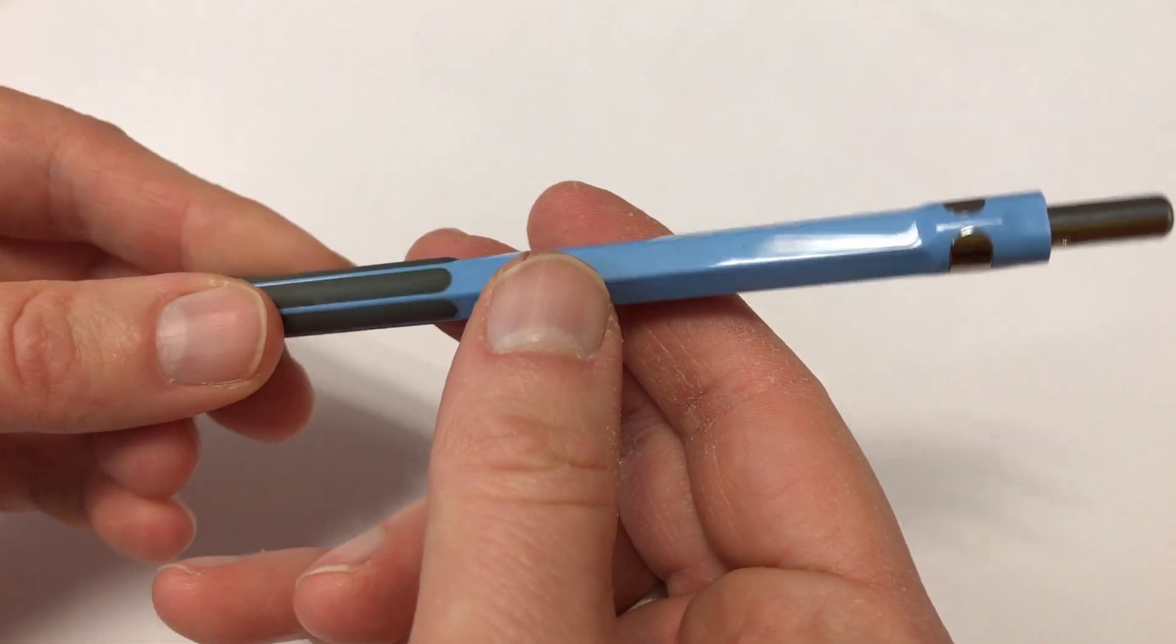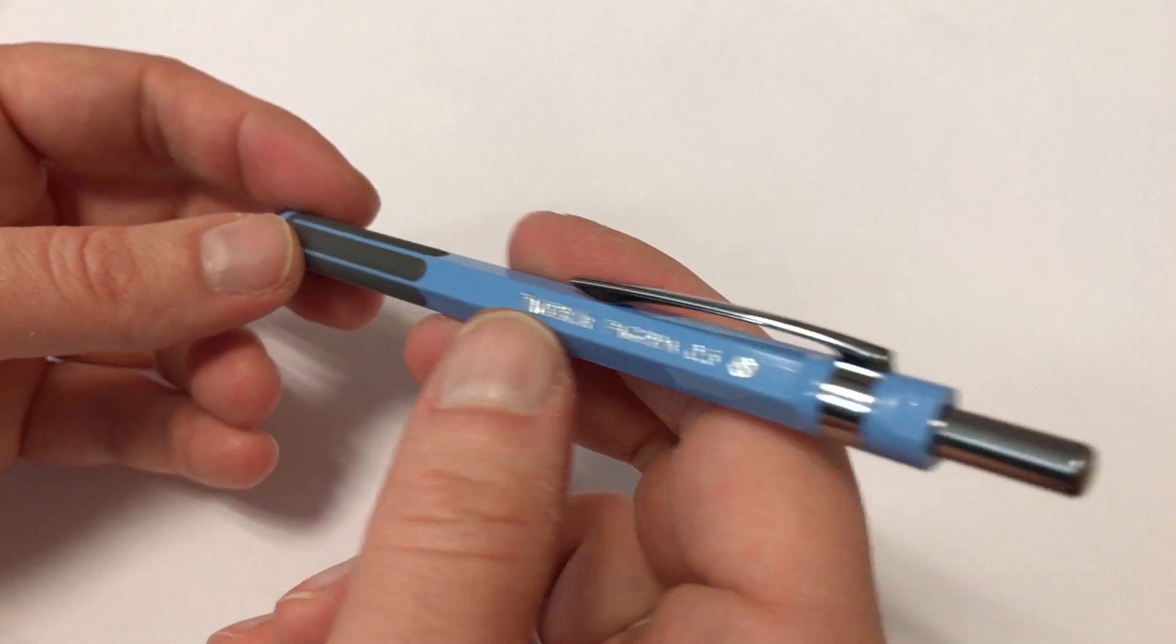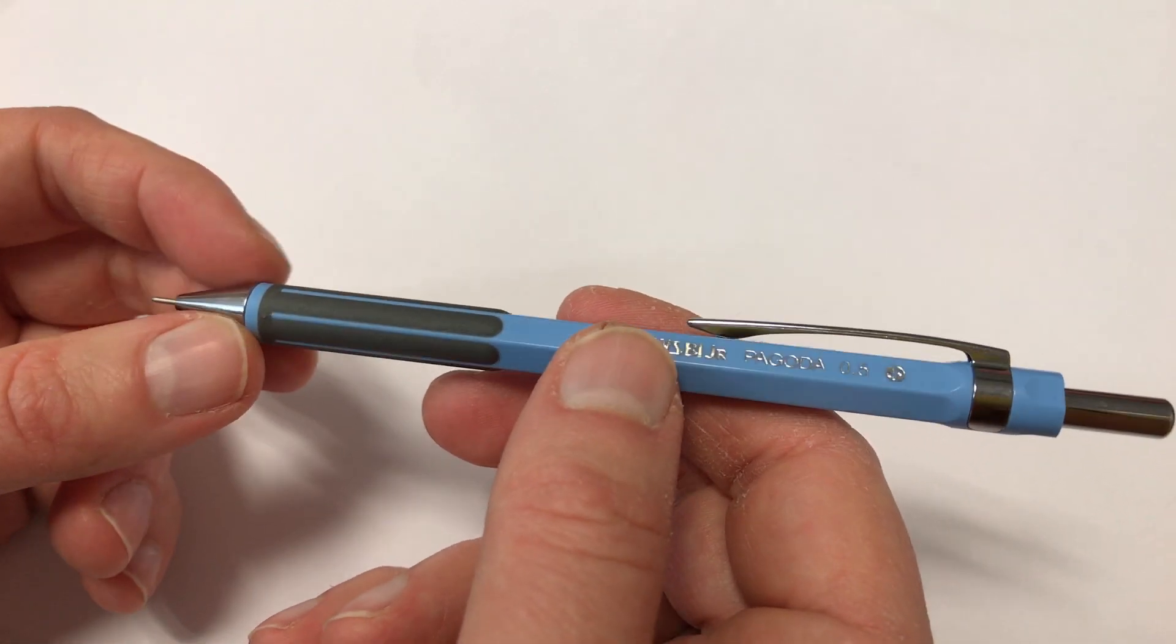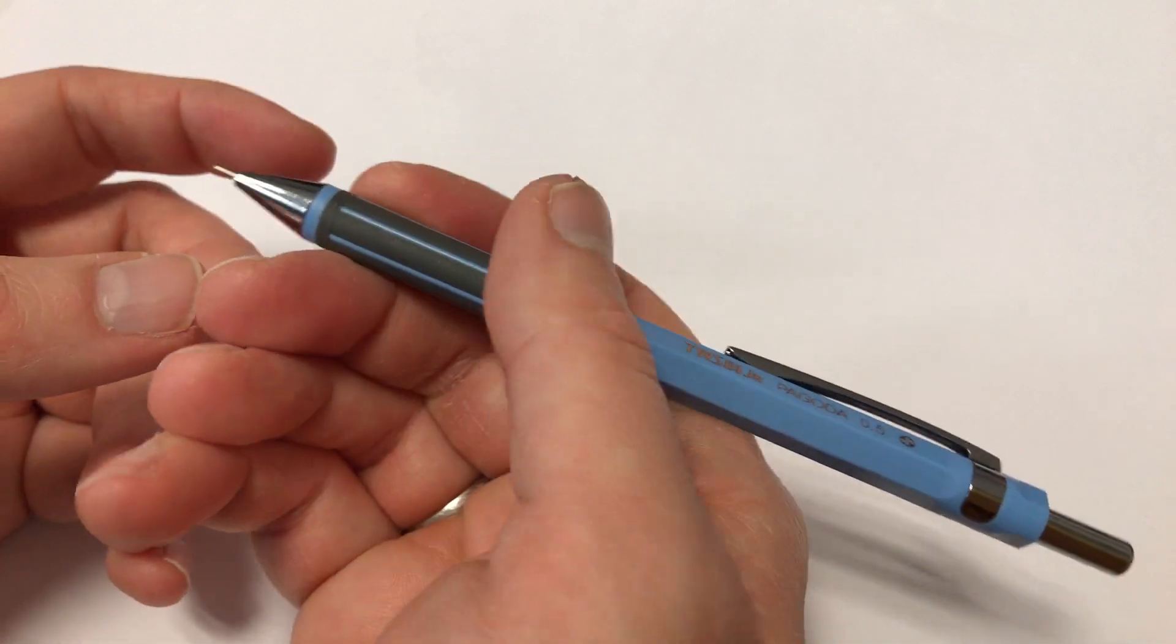There's a hexagonal barrel, a bit like a pencil, and it has a grip section here which makes it very grippy, very nice.